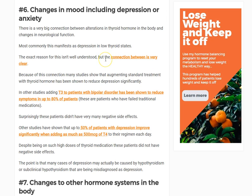Number six is changes in mood, including depression. We don't fully know why thyroid hormone has a direct effect on depression, but the studies are clear — hypothyroid patients are more likely to be depressed, more likely to have psychiatric disorders like bipolar disease, and have increased suicide rates. T3 specifically has been shown to be very effective in treating bipolar disorder.